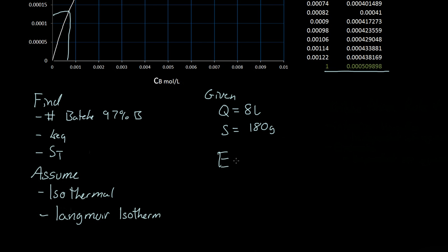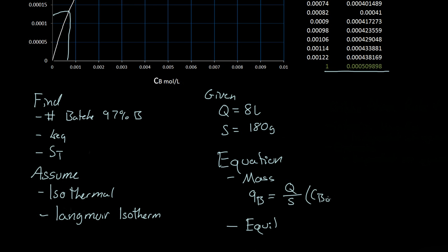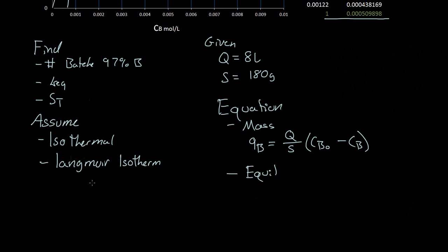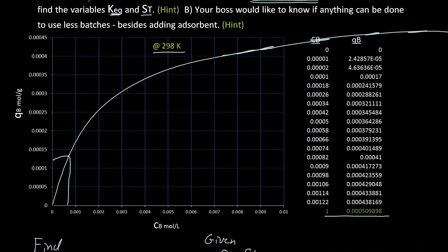Next, we need the equations we'll be using. To solve it analytically, we need the mass balance equation and the equilibrium equation. The mass balance is: QB equals the volume of water divided by the total amount of adsorbent, times the initial concentration of B minus the concentration of B in the water. Since we're assuming a Langmuir isotherm, the equilibrium equation is: QB equals KEQ times CB times ST, all divided by 1 plus KEQ times CB.